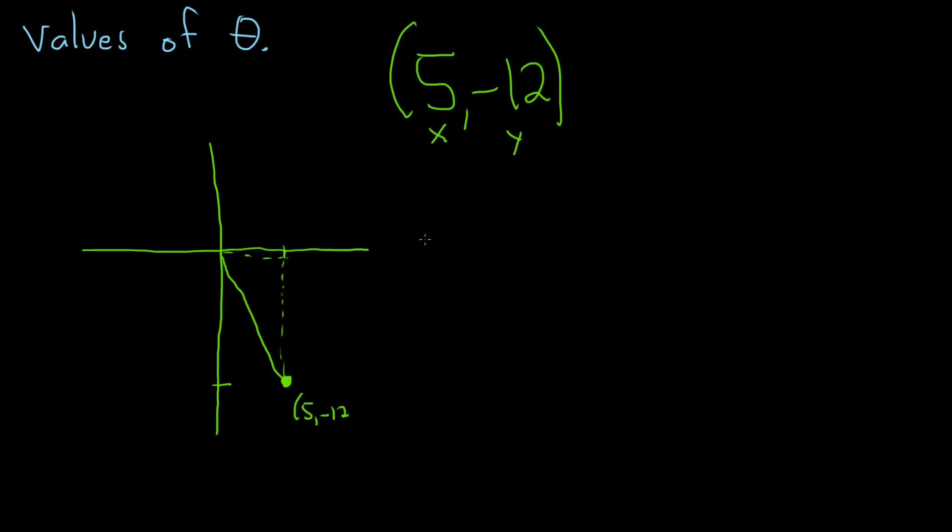And so in order to find the six trig function values, we have to use the formulas. Recall that first r is given by the square root of x squared plus y squared.